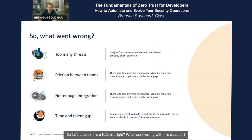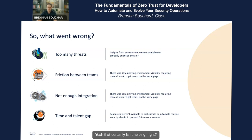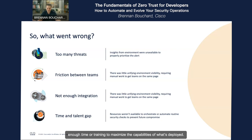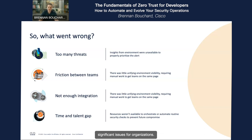Let's unpack this a little bit — what went wrong? Was it inadequate tooling, such as email security or lack of MFA? Was it a siloed organization where a lack of information sharing makes a coordinated response really difficult? It could be because the tools don't work together, and the team hasn't had enough time or training to maximize the capabilities of what's deployed. It may not have every feature enabled or be leveraged to the greatest extent possible. It's the culmination of so many of those challenges stacked on top of each other that create significant issues for organizations.